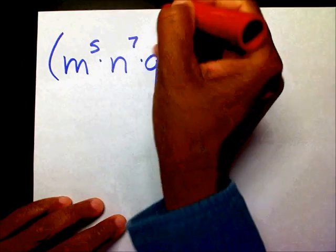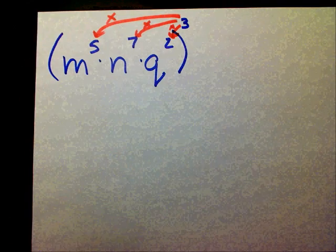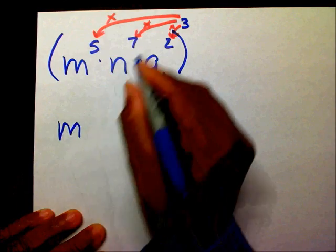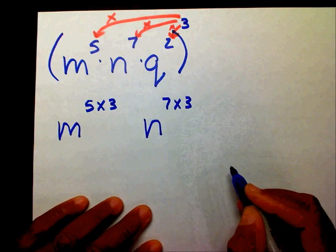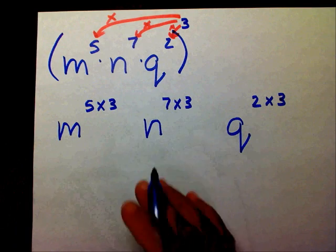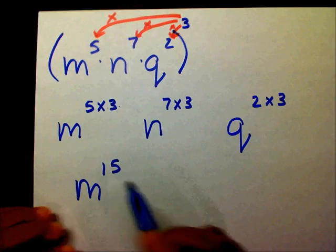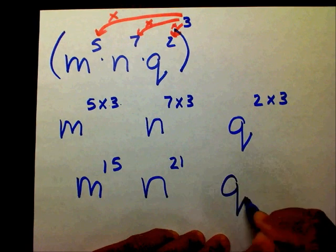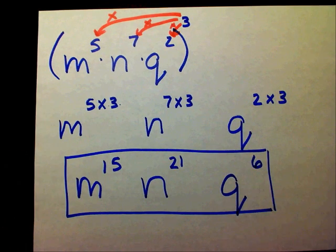So I'm going to multiply my 3 times 5, my 3 times 7, and my 2 times 3. That gives me m to the 5 times 3, n to the 7 times 3, and q to the 2 times 3. So that's m to the 15th — because 5 times 3 is 15 — n to the 21st — because 7 times 3 is 21 — and q to the 6th. This is your final answer in simplest form.